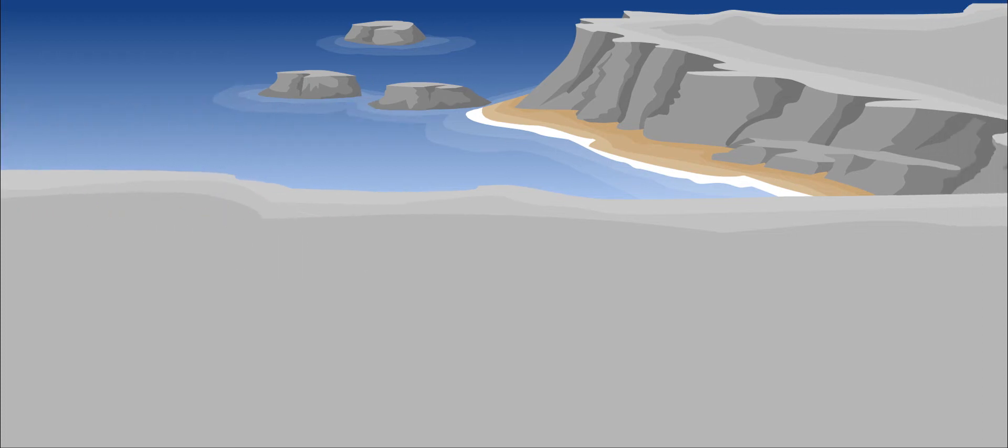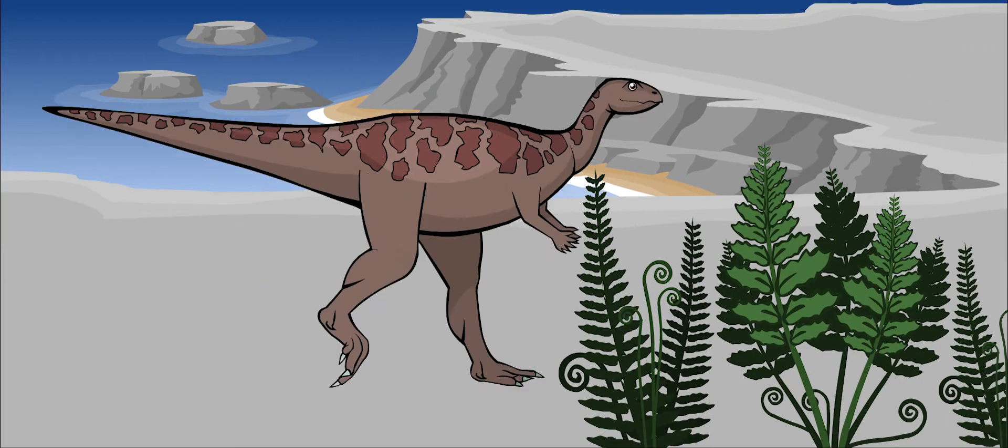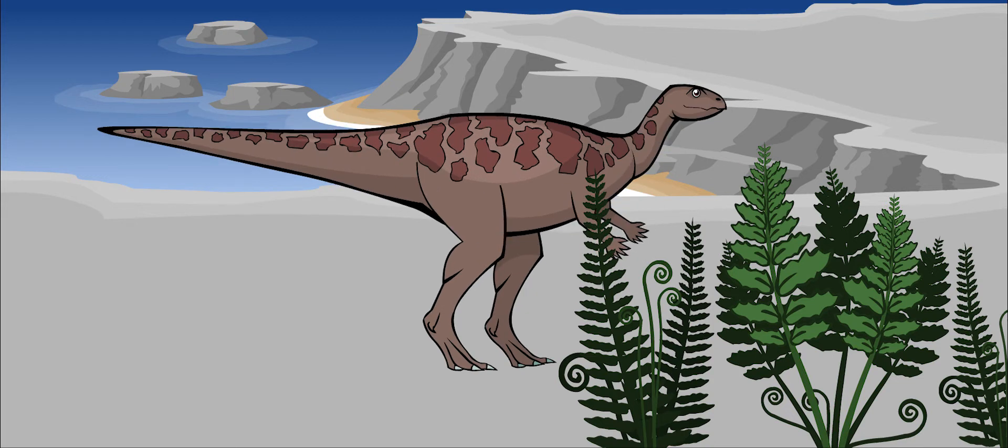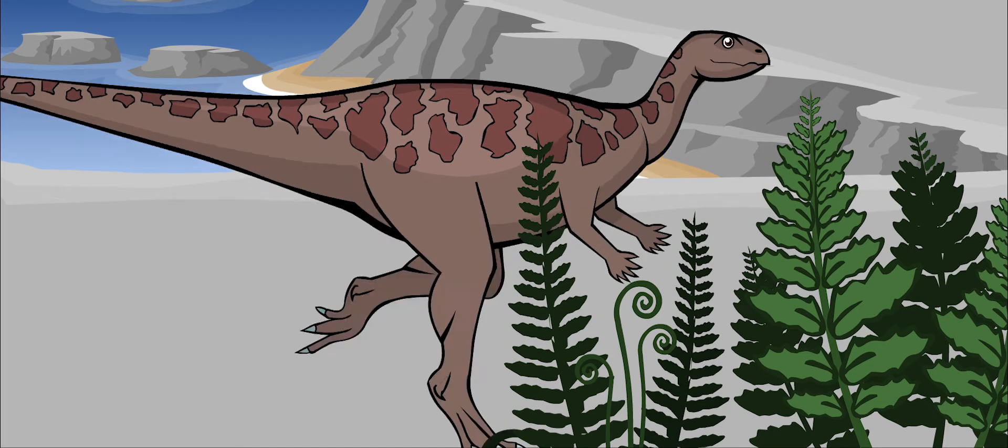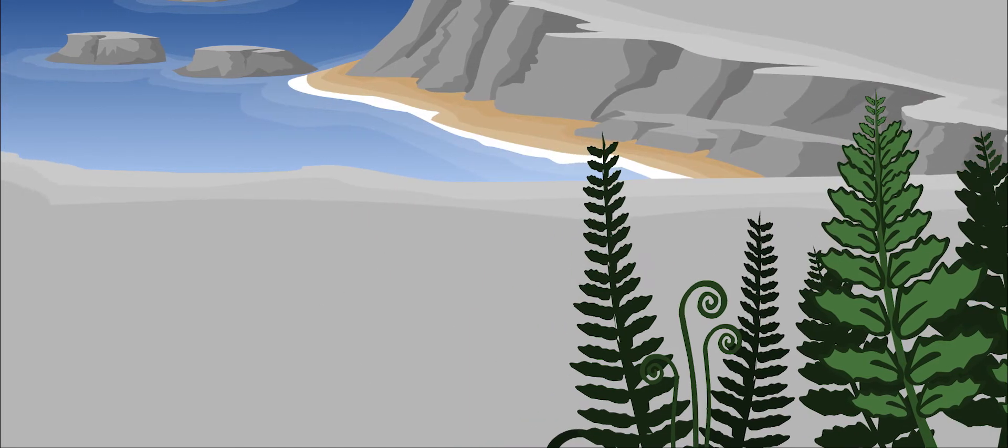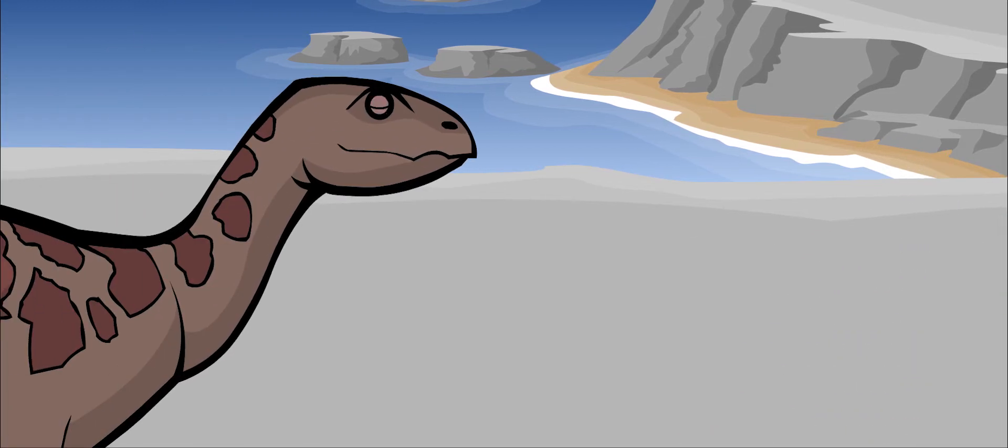Dryosaurus was an herbivore, meaning that it only ate plants. It had no front teeth, but a sharp, hard beak that could rip the leaves off of plants. It could store the food it was chewing in its cheeks. This was very handy when a dinosaur had to eat and run. It had grinding teeth in the back of its mouth.